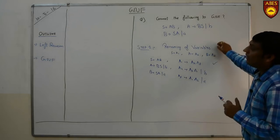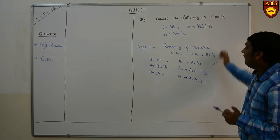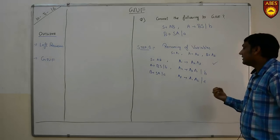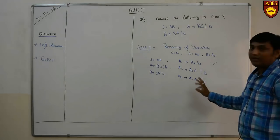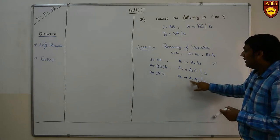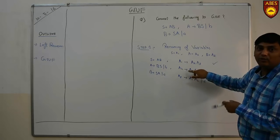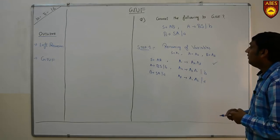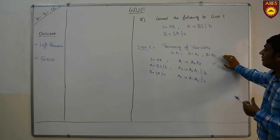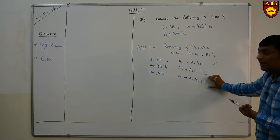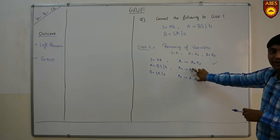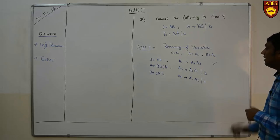The main motivation to rename the variables is that when we solve the left recursion problem, we will find the value of A3 and then substitute the value of A3 into the lower terms A2 and A1 to get the combined result. The main focus of renaming was to find the value of the maximum-indexed term and eliminate the left recursion.